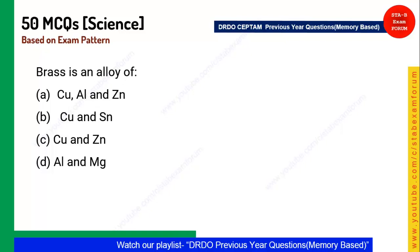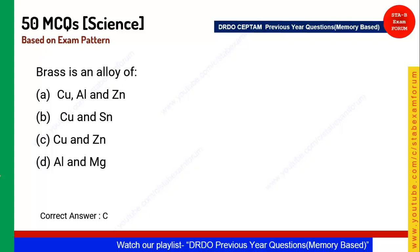Next question on alloys — a very important topic: Brass is an alloy of what? The correct answer is option C — copper and zinc.